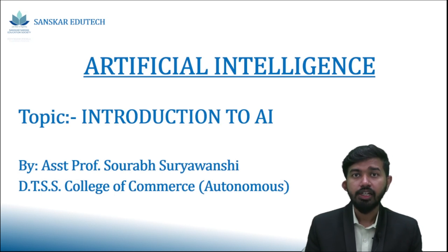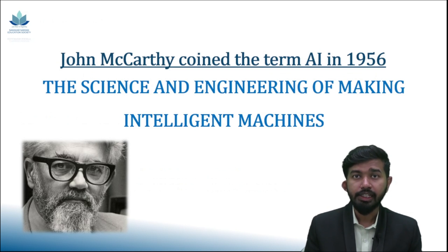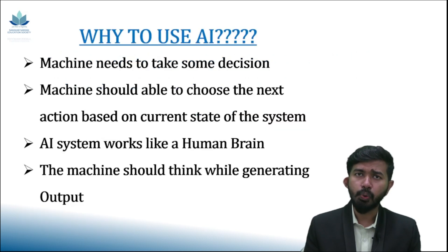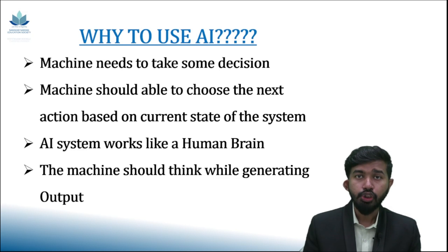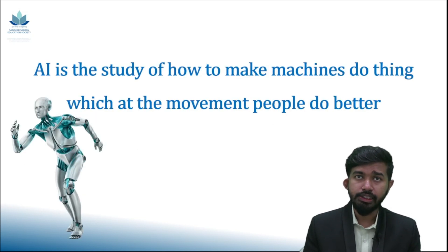Artificial intelligence — the term was coined by John McCarthy in 1956. The term AI can be defined as the science and engineering of making intelligent machines. Why is AI so important? By using AI, we want the machine to be able to make some decisions, choose the next action based on past experiences, and work like a human brain. AI is the study of how to make machines do things which human beings are currently doing, but in a better way.